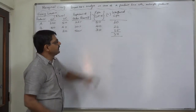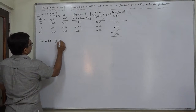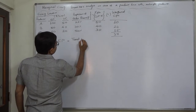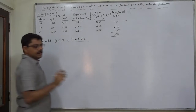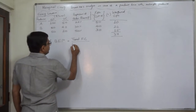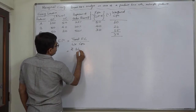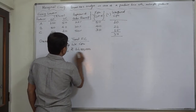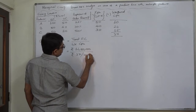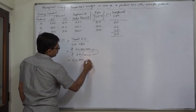Now that we have the weighted contribution per unit, we can calculate the overall break-even point. Overall BEP equals total fixed cost divided by weighted contribution per unit. The fixed cost given in this question is Rs.14,080,000 and our weighted contribution per unit is Rs.37. So the overall BEP comes to 40,000 units.